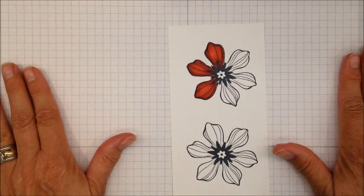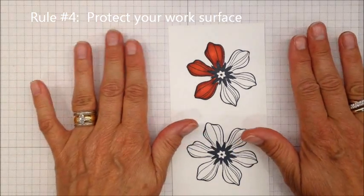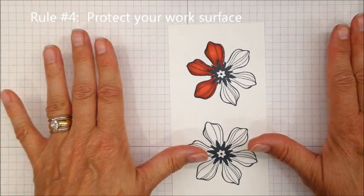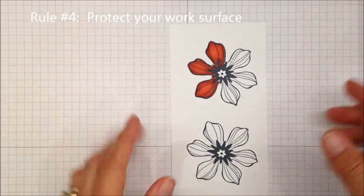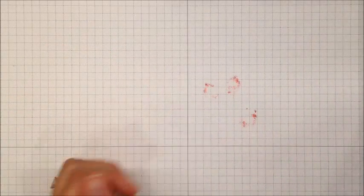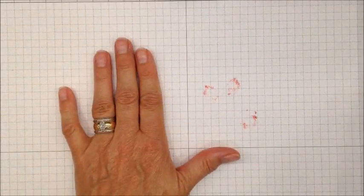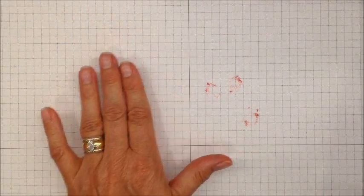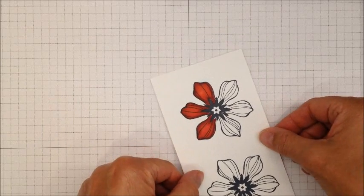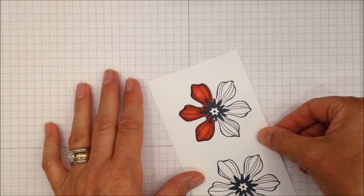Rule number four is to protect your work surface. This ink is meant to saturate our Whisper White card stock, but it does also go through. So I want to make sure you have plenty of protection for your work surface below. I've got about four sheets of grid paper here, probably overkill, but in any event I wanted to just make sure.